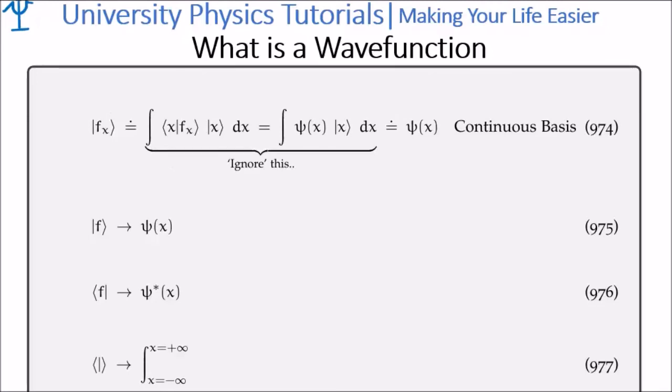So the ket is not the same thing as your wave function, but in calculations with the continuous basis you can basically say they're synonymous. So with our continuous basis, our kets are represented by wave functions, our bras are represented by the complex conjugate of our wave functions.